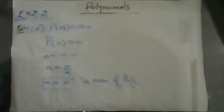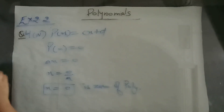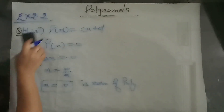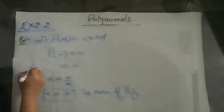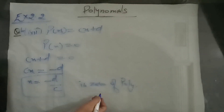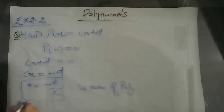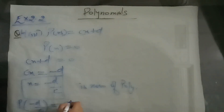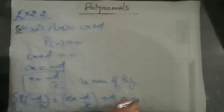Seventh part: cx plus d. Put cx plus d equal to 0. c times x equals minus d, so x is minus d upon c. This is the zero of the polynomial — the number which satisfies the polynomial and makes the answer 0. That is p of minus d by c. You can verify: put minus d by c in cx plus d, c and c cancel, minus d plus d gives 0. So it is a zero of the polynomial.